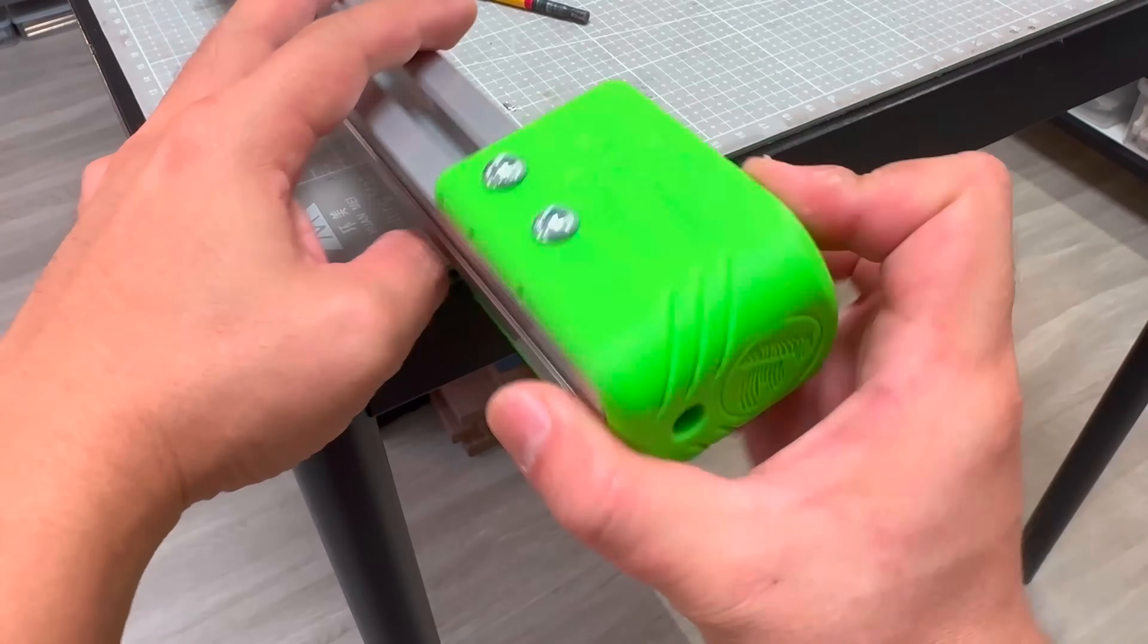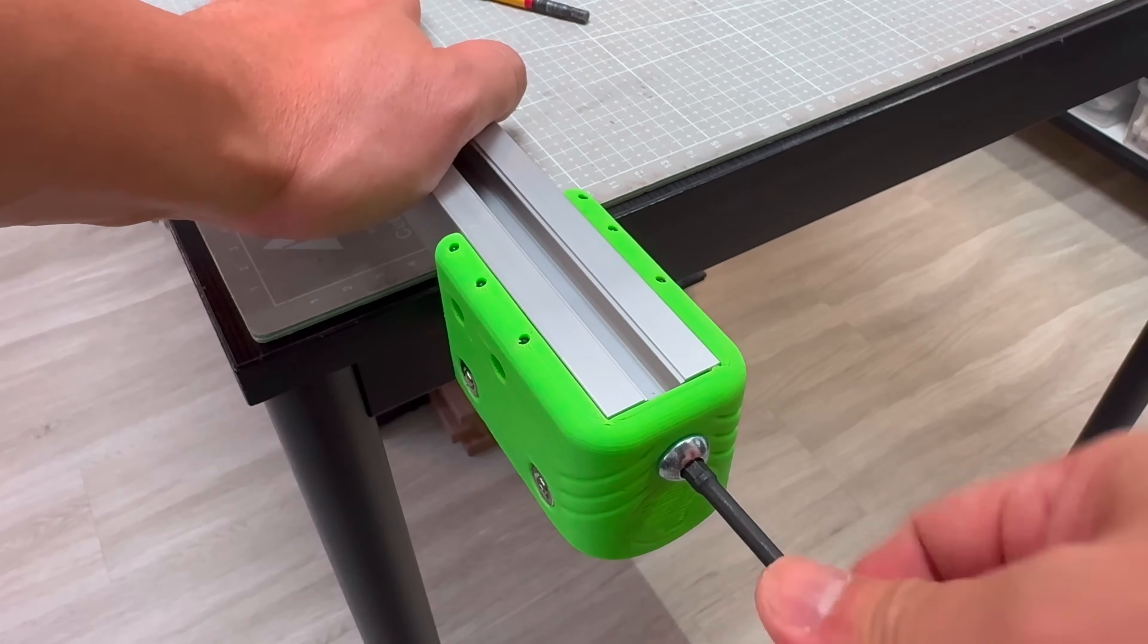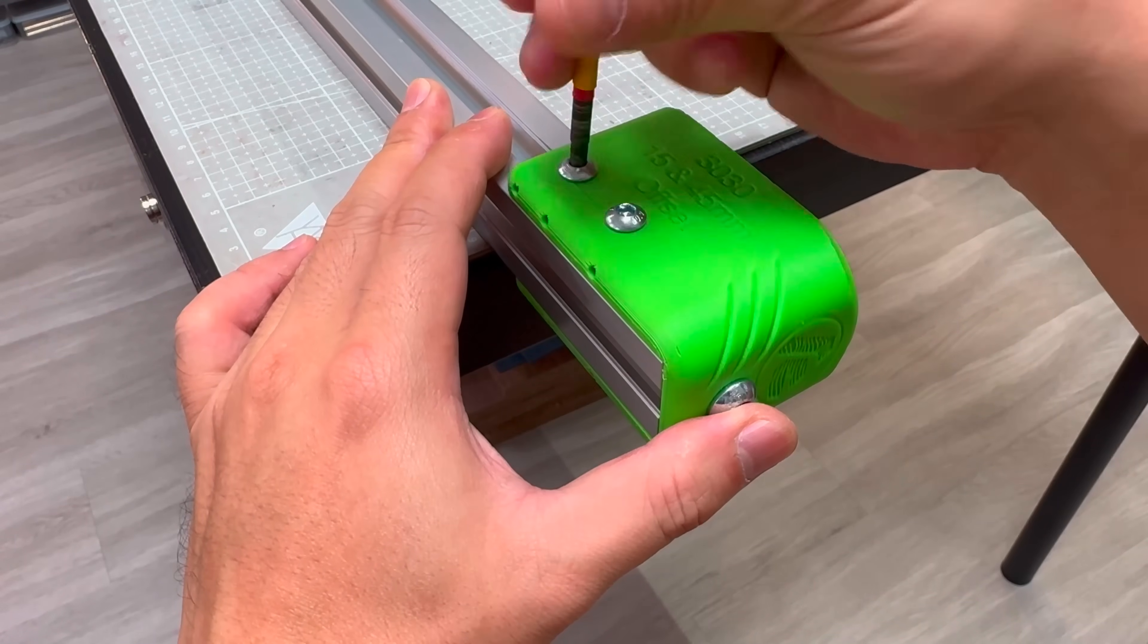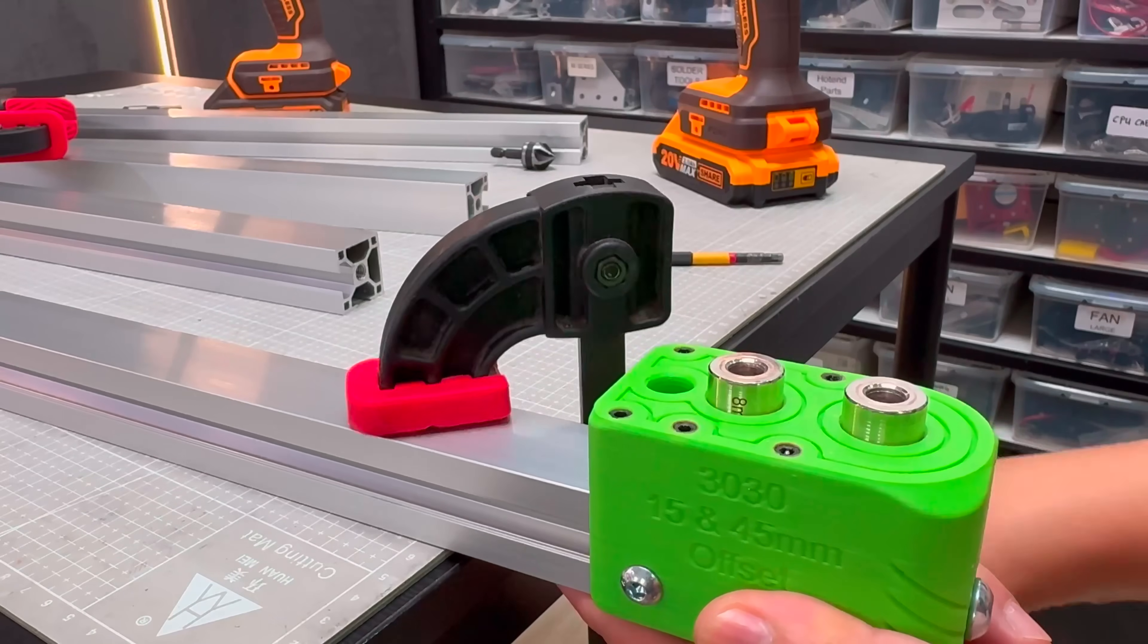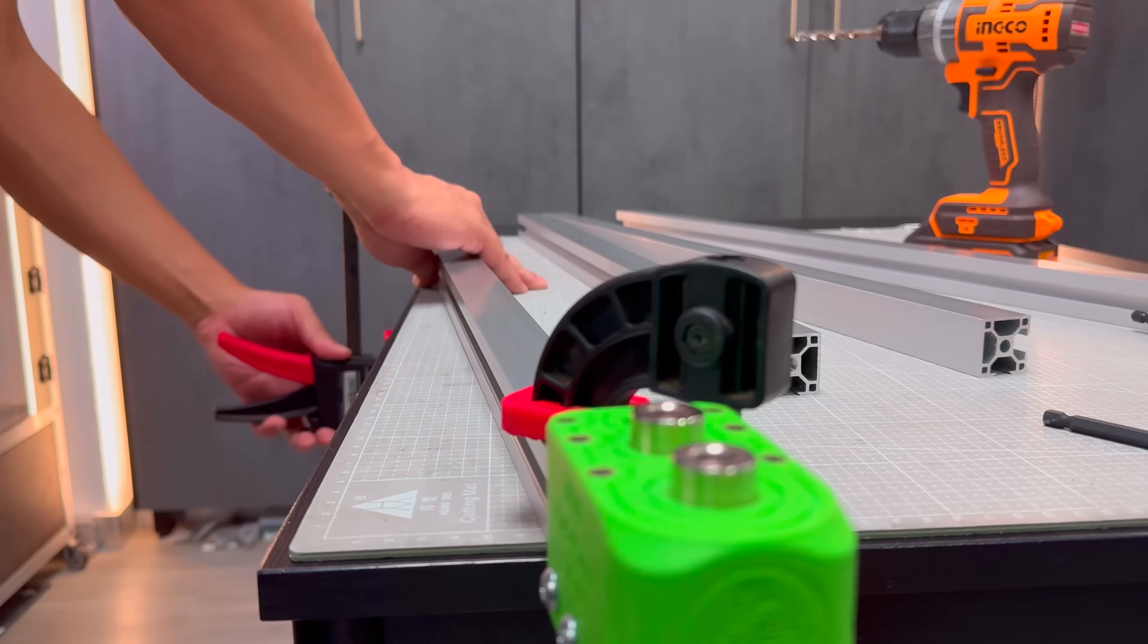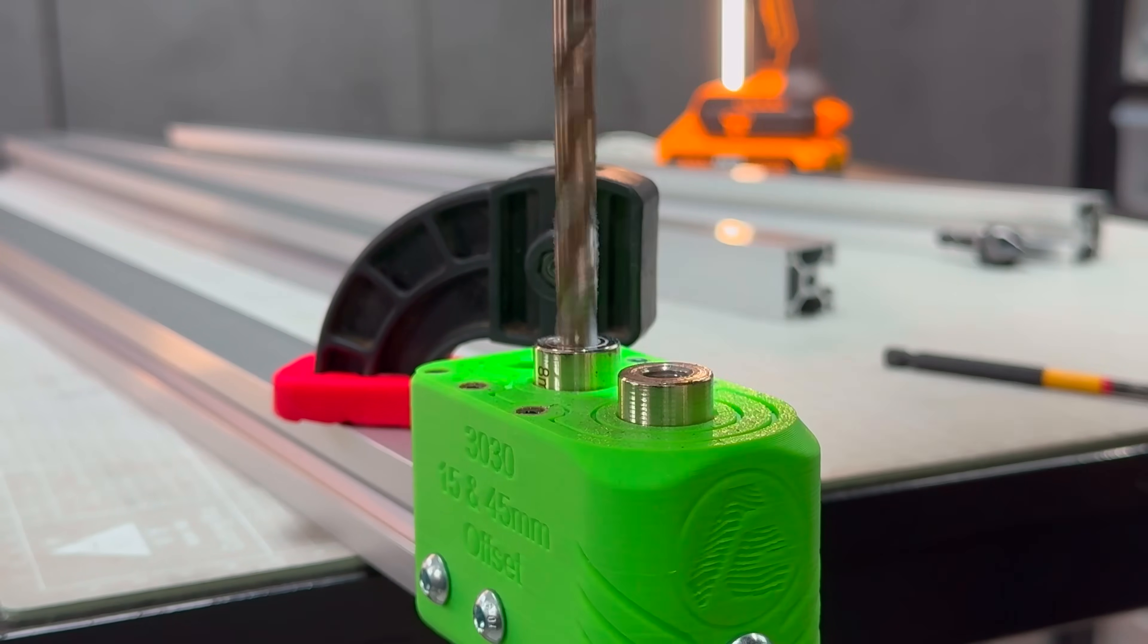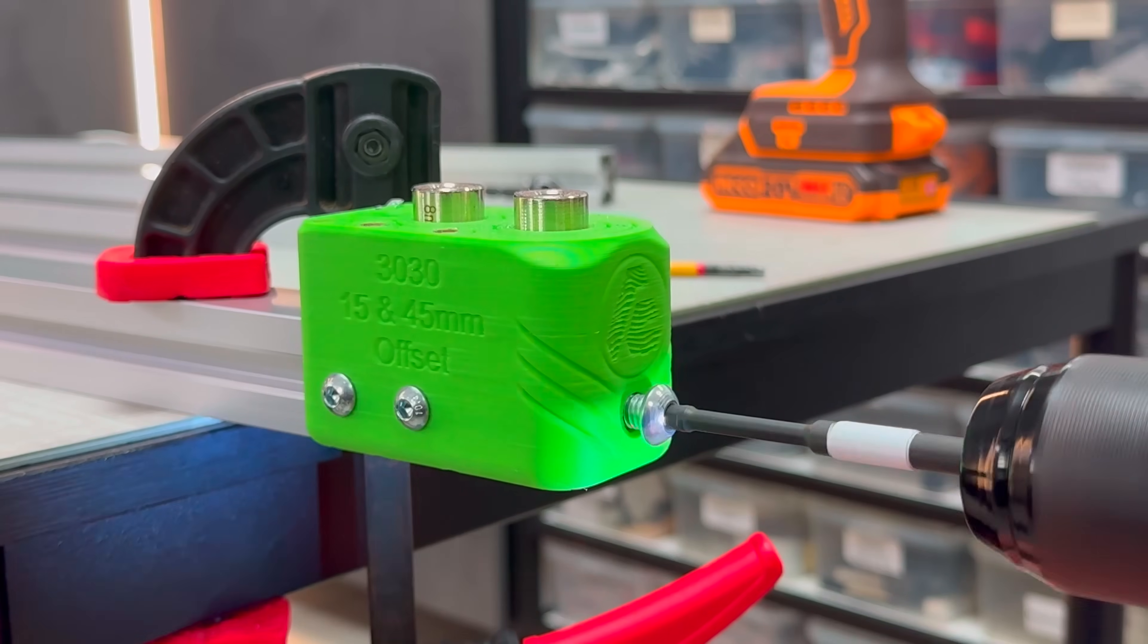To mount the jig correctly, we'll first ensure there's no gap at the front, then firmly secure it using the side screws. With this setup, together with clamps to hold down our material, we'll be able to repeatedly make accurate hole placements. The holes will be centered 15mm and 45mm from the edge of the aluminum profile, ready for internal joinery.